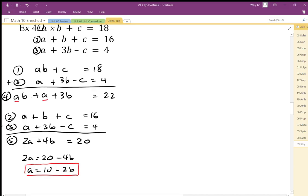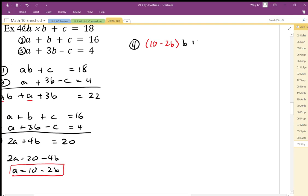So then I'm going to set up equation 4, and wherever I see an a, I'm going to replace it with the equivalent a equals 10 minus 2b. And then I end up with a b here, plus a, so whenever I hit an a, I'm going to replace that a with a 10 minus 2b, plus 3b, and that's going to be equal to 22.